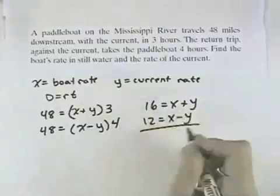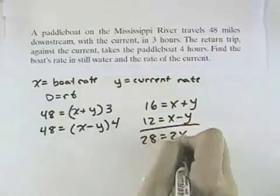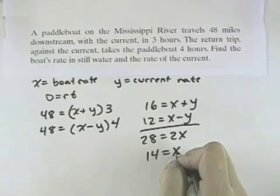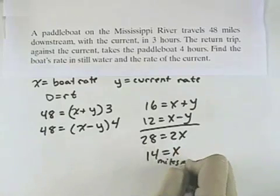I can use the addition method to eliminate my y's, and I'll see that 28 equals 2x, and dividing by 2 I get 14 equals x. That means the boat's rate in still water was 14 miles per hour.